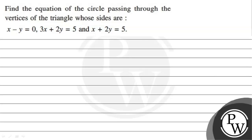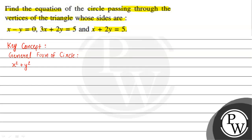Hello! Let's read the given question. The question states: find the equation of the circle passing through the vertices of a triangle whose sides are x minus y equal to 0, 3x plus 2y equal to 5, and x plus 2y equal to 5. The key concept to solve this question is the general form of a circle: x squared plus y squared plus 2gx plus 2fy plus c equal to 0.